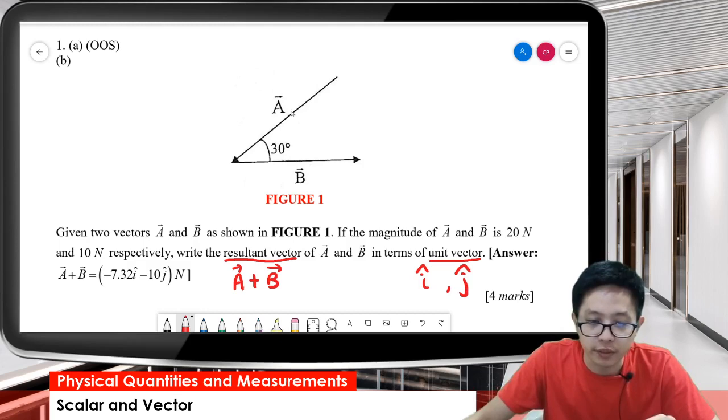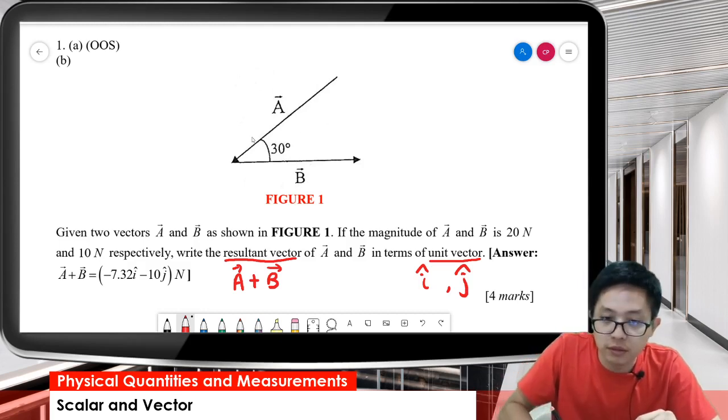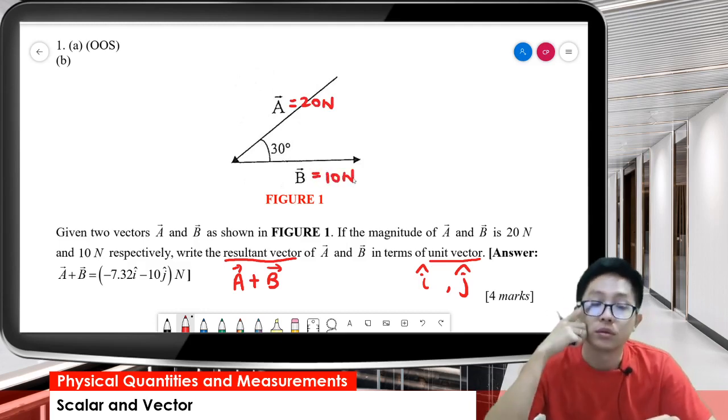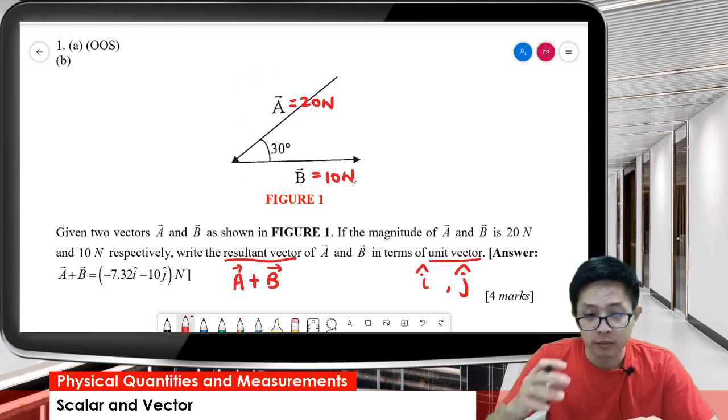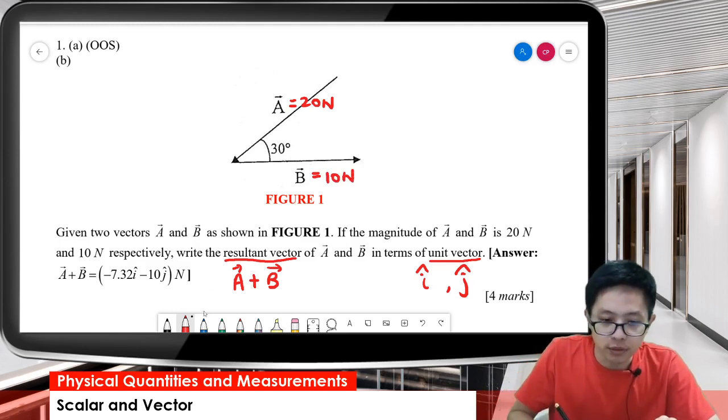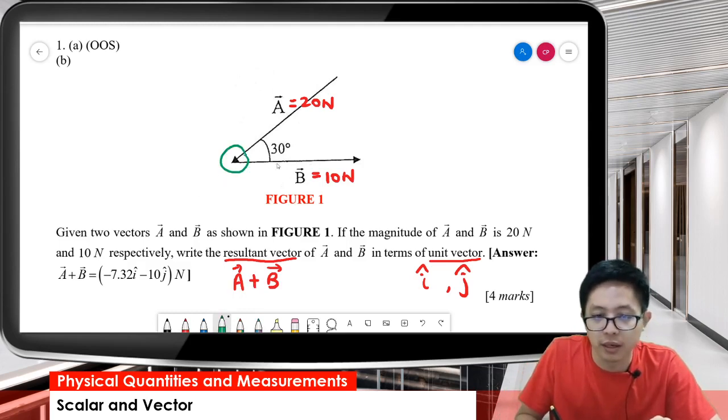So how to do? We have vector A and vector B. Vector A is 20 Newton and B is 10 Newton. To find A plus B, add them together. Important thing here is we must take note: this vector A direction is going this way, going downward. B is going to the right.